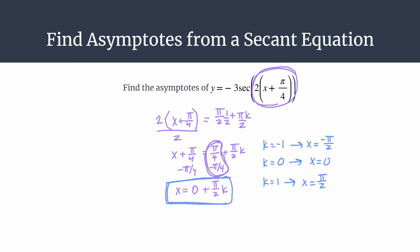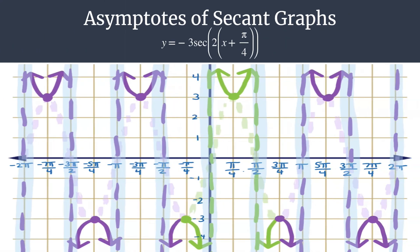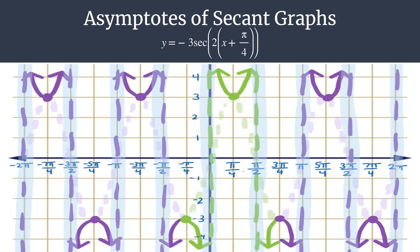Okay, so let's take a look now at the graph to confirm that we have the correct asymptotes. Okay, so here's our picture of our graph. Here's our equation for our asymptotes. And notice that the three asymptotes that we predicted are here. Here's the one when k equals negative 1. Here's the one from k equals zero. Here's the one from k equals one.